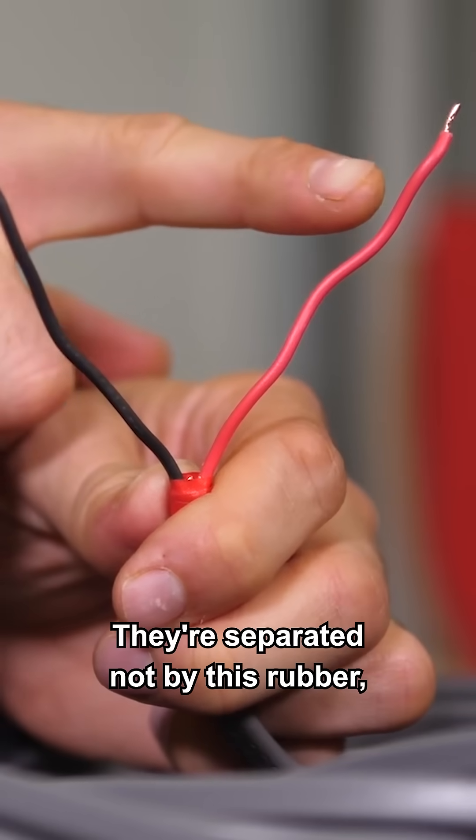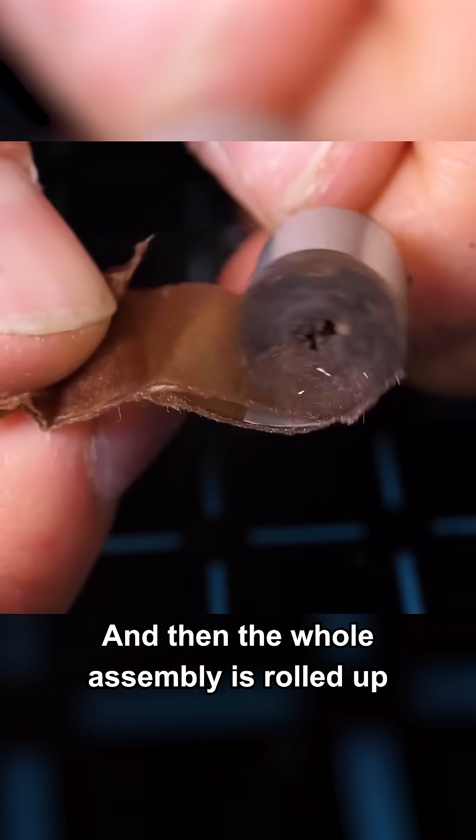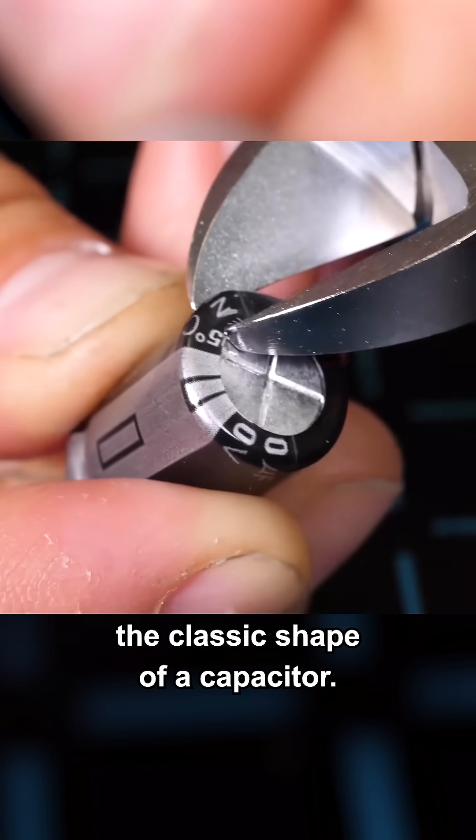They're separated not by this rubber, but by maybe wax paper. And then the whole assembly is rolled up into a cylinder, which is how you get the classic shape of a capacitor.